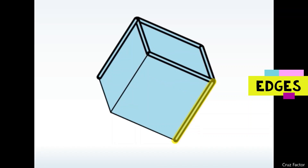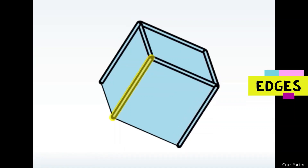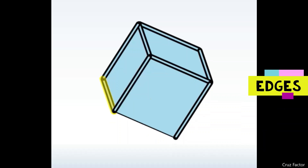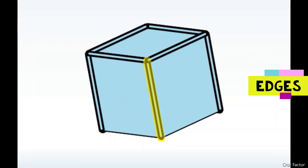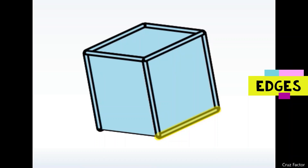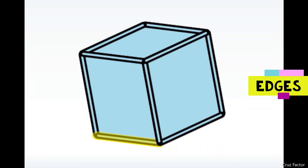Now we have six edges, and I'm not done yet. The next part I'm going to highlight is here — that's seven. And then I'm going to highlight the next part here — eight. And then I'm going to highlight the next part here — that's nine. But I'm not done yet, because now I'm going to move the cube to the other side. So you can see that now we have ten. And then I'm going to move it again and keep counting — I've got eleven. And then I'm going to finish it off here with twelve. So we know that the number of edges that a cube has is 12.